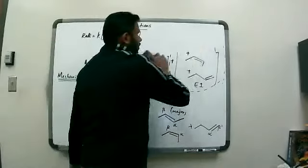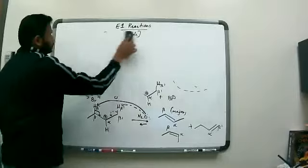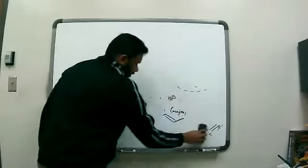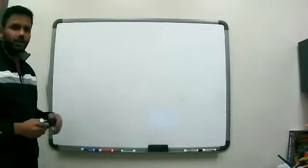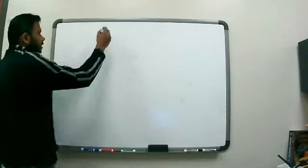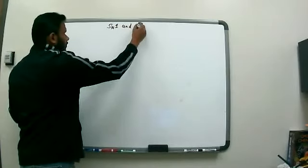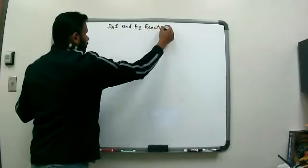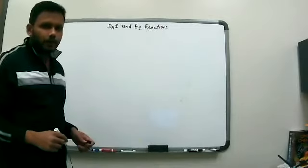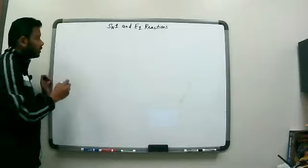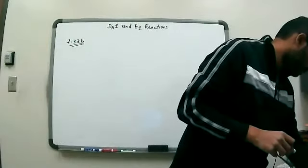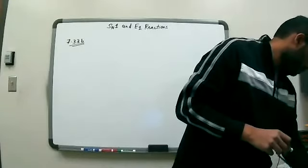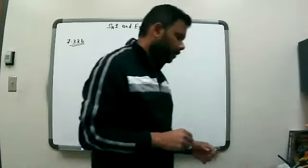I'm going to work out a problem from the textbook to show you how to use information about SN1 and E1 combined. We're going to talk about what products are possible. The mechanism of E1 itself is simple — now that we know SN1 and E2, E1 is relatively simple to understand. This example is problem 7.33 B in the textbook.